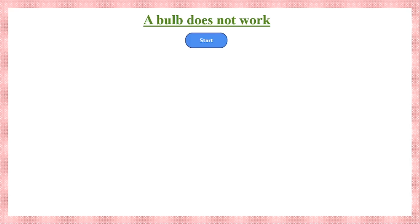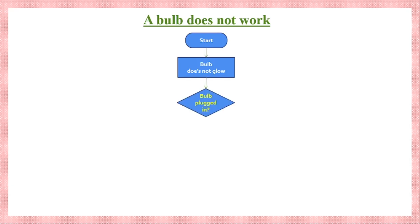Next we will draw a flowchart for a scenario where a bulb is not working. We start with the relevant symbol representing the starting point of that activity. Then there is a step indicating that the bulb does not glow. First we check whether the bulb is plugged in properly or not — this is a decision block. If the outcome is no (the bulb is not properly plugged in), then we plug it in properly, and the bulb will glow — that is the end of the process.